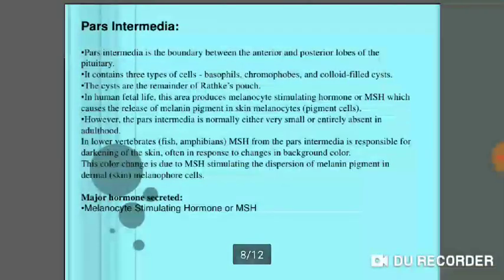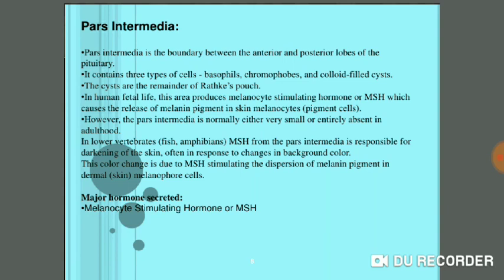The pars intermedia, or intermediate lobe, is located between the anterior and posterior lobes of the pituitary gland. In humans, during fetal life, this portion produces melanocyte stimulating hormone (MSH). The function of MSH is to control the release of melanin pigments in the skin — so pigmentation on the skin is controlled by MSH, which is released from the pars intermedia.